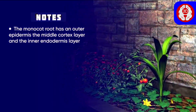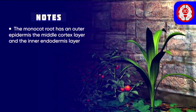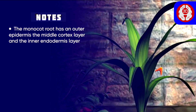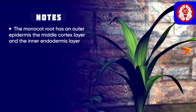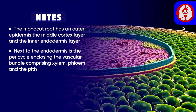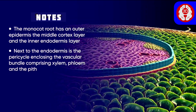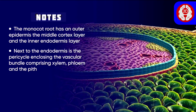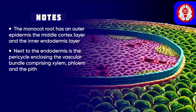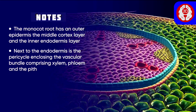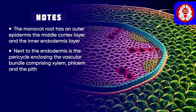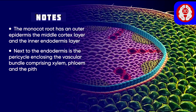The monocot root has an outer epidermis, the middle cortex layer, and the inner endodermis. Next to the endodermis is the pericycle enclosing the vascular bundle comprising xylem and phloem, and the central core called pith.